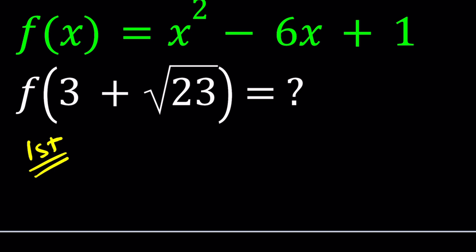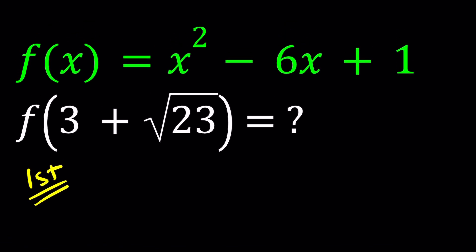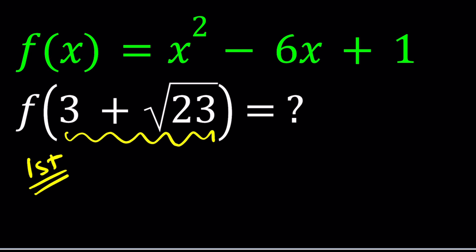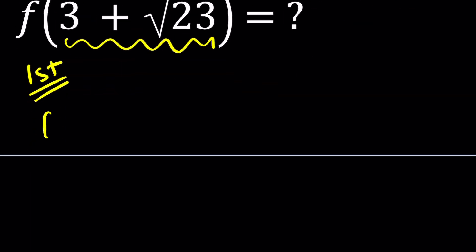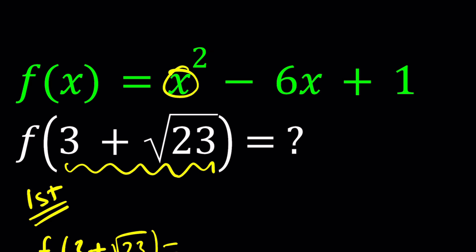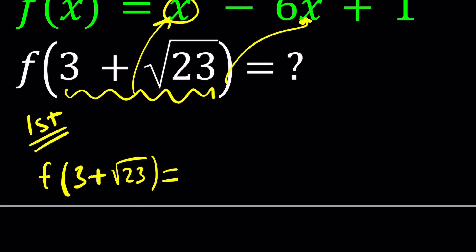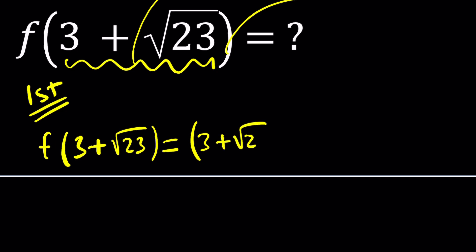So the first method is going to be pretty straightforward. I'm going to replace x with this input value. So f of 3 plus square root of 23, based on the given, is equal to x squared minus 6x plus 1. So basically this value is going to replace the x's in all places. We're going to have to square that number first, and then minus 6 times the same number. Since 1 is constant, it's unchanged.